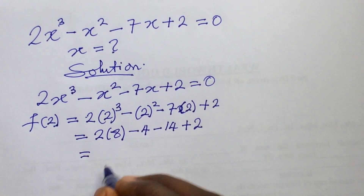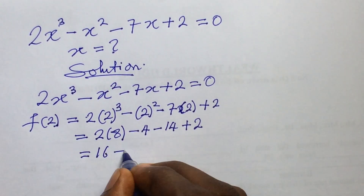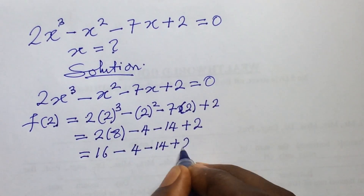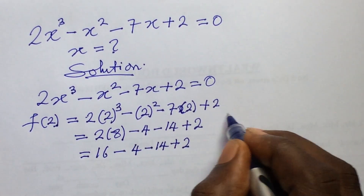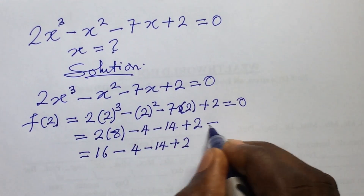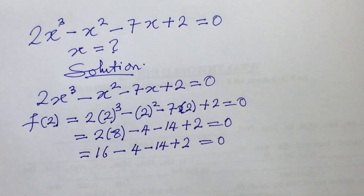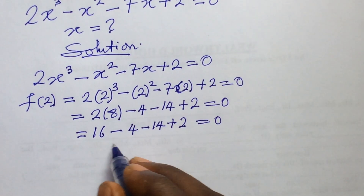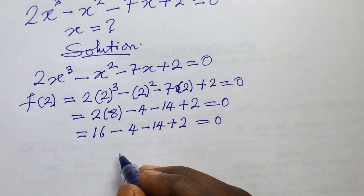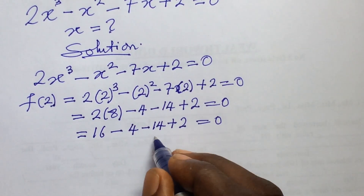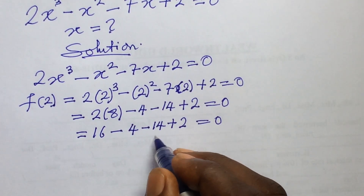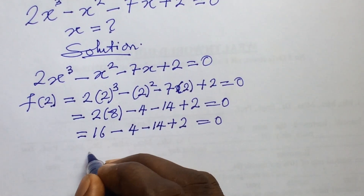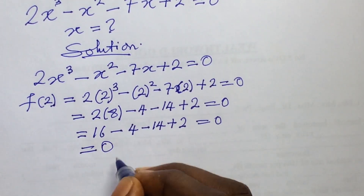This gives us 2 × 8 - 4 - 14 + 2, which equals 16 - 4 - 14 + 2. Checking: 16 - 4 = 12, then 12 - 14 = -2, and -2 + 2 = 0. So f(2) = 0, confirming that x = 2 is indeed a root.